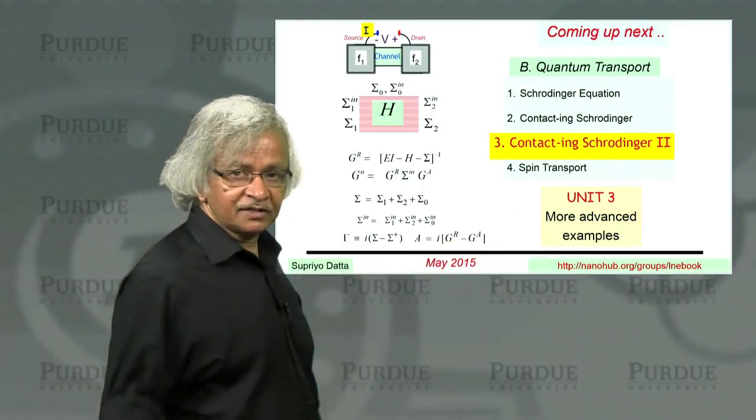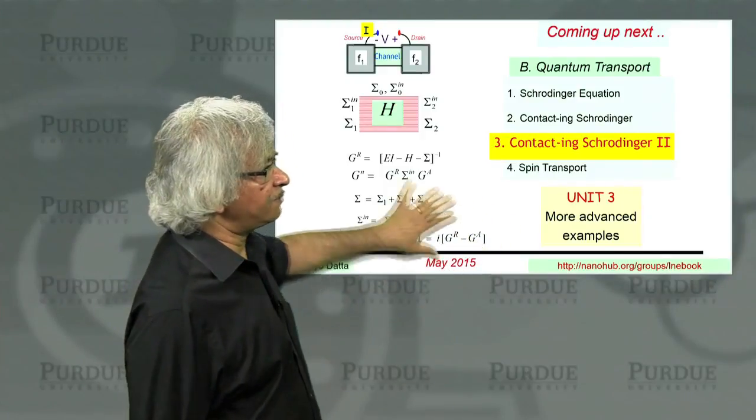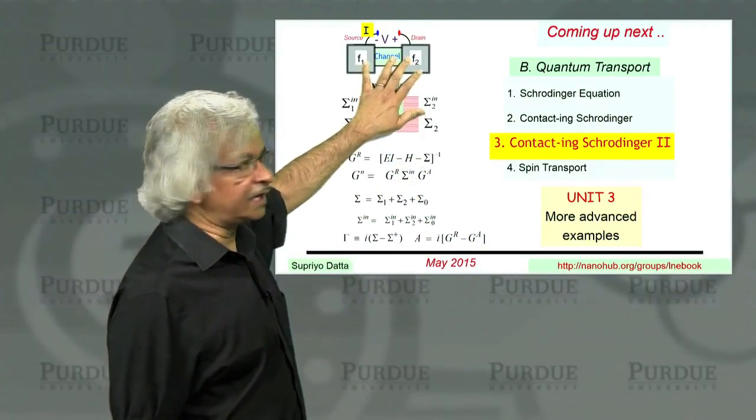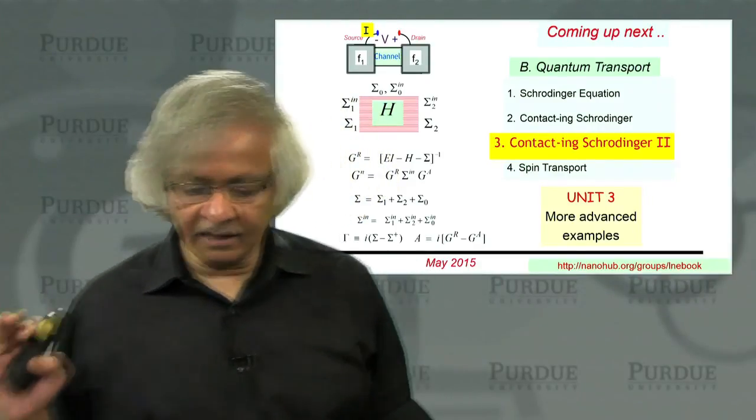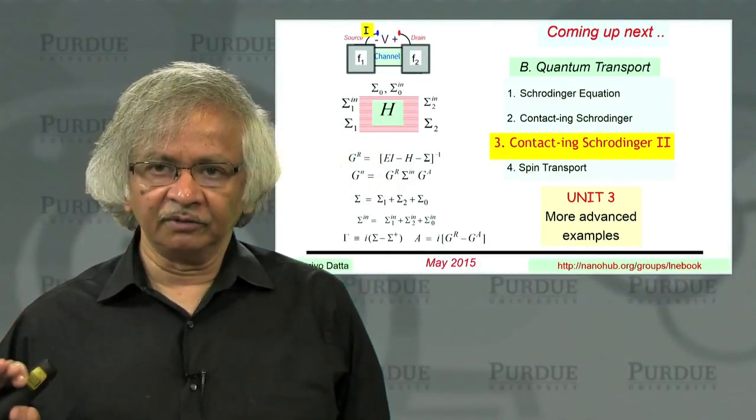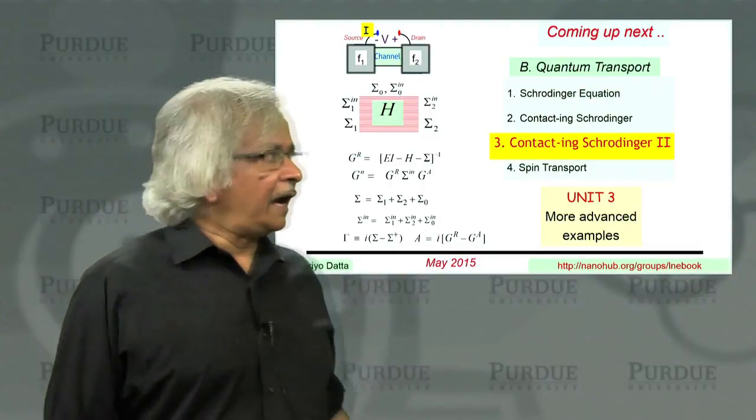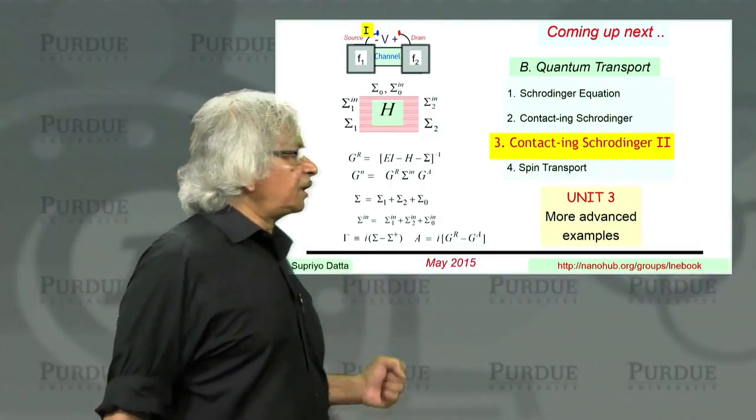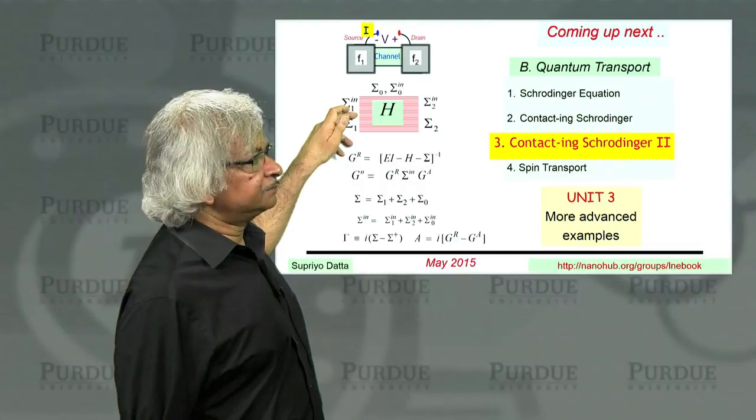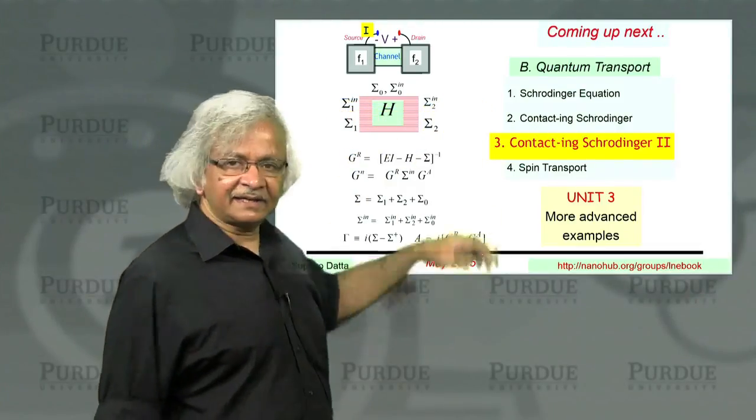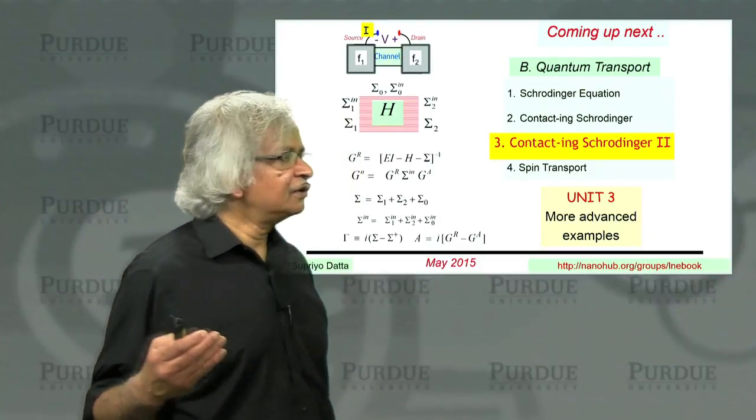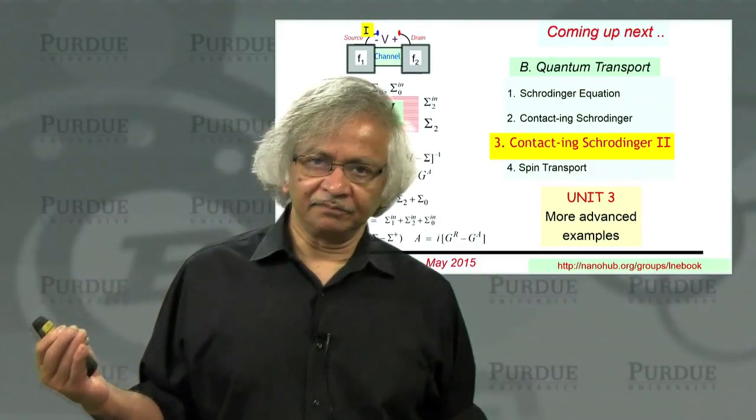What we have done in the first half of this unit is set up these basic equations. The basic NEGF equations that you could use to analyze any device, including quantum effects. And to apply it to a particular problem, what you need is this sigma. And how do you obtain the sigma? Well, in the second half of this unit we saw a few simple 1D examples.